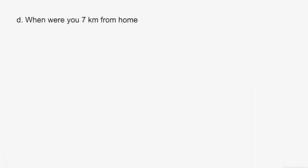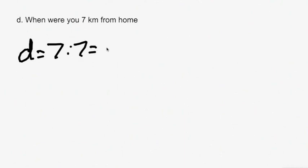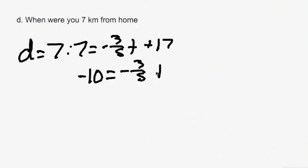Part D asks when were you 7 kilometers from home — find T when D equals 7. Plug in 7 for D: 7 equals negative 3 fifths T plus 17. Moving the 17 over gives negative 10 equals negative 3 fifths T, and solving for T gives T equals 50 thirds minutes.